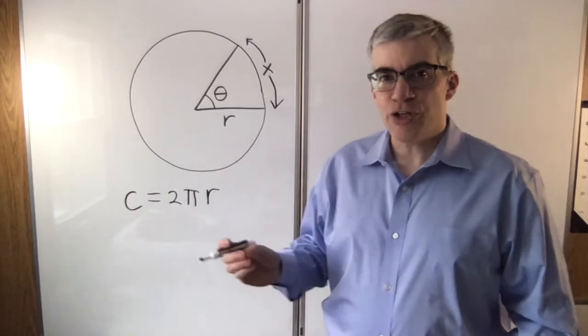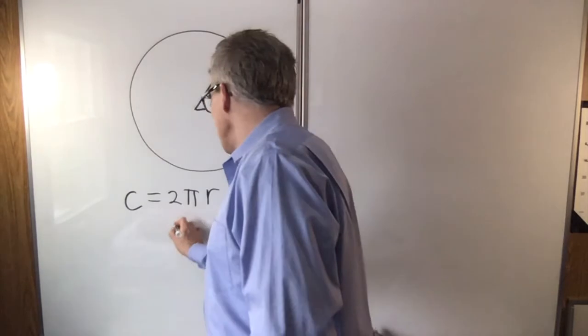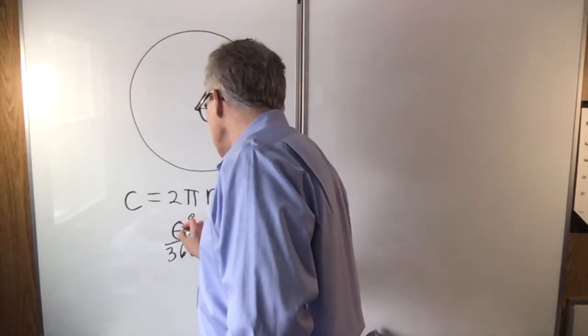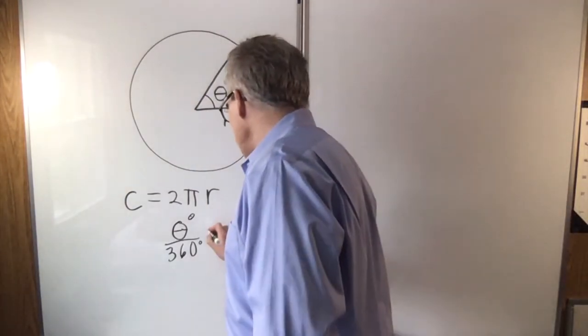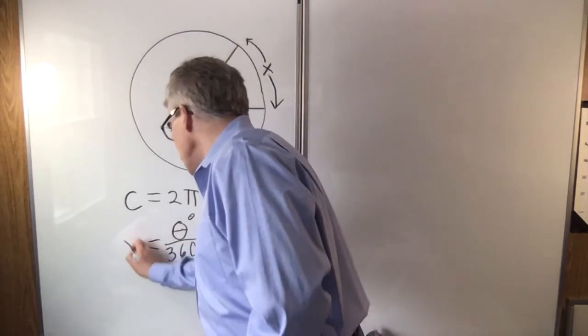What fraction of the circle are we talking about? If we have theta degrees out of 360 degrees, that would be the fraction of the circle. And that fraction times 2 pi r should equal x.